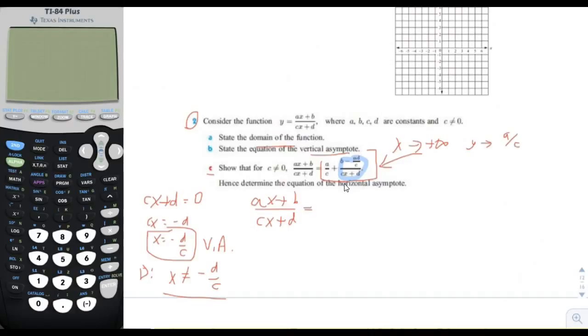So then you can automatically see that the y value is going to go to a over c. What if you had x become a really big negative number? Then you're going to have the blue term become 0 and y also becomes a over c. So you can see easily from this form that the horizontal asymptote is a over c, and that's why it's kind of useful.